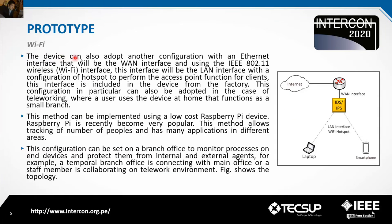The device can also adopt another configuration where the Ethernet interface serves as the WAN interface and the IEEE 802.11 wireless Wi-Fi interface serves as the LAN interface, configured as a hotspot to perform the access point function for clients. This is the device acting as an access point for clients, with the Ethernet interface providing the connection to the internet.